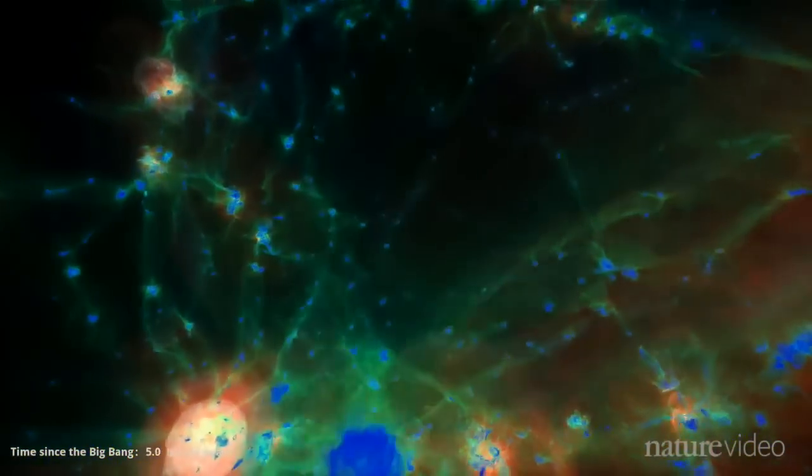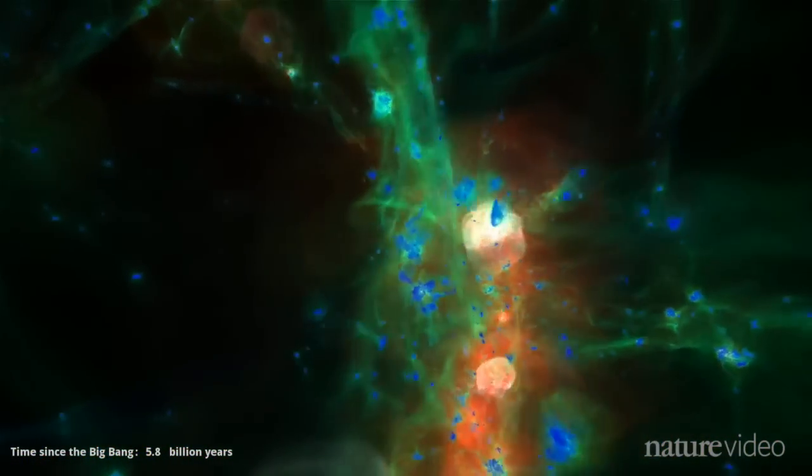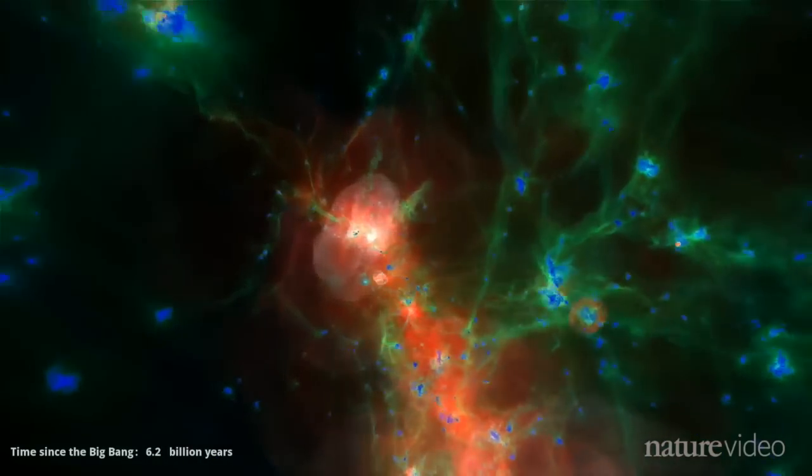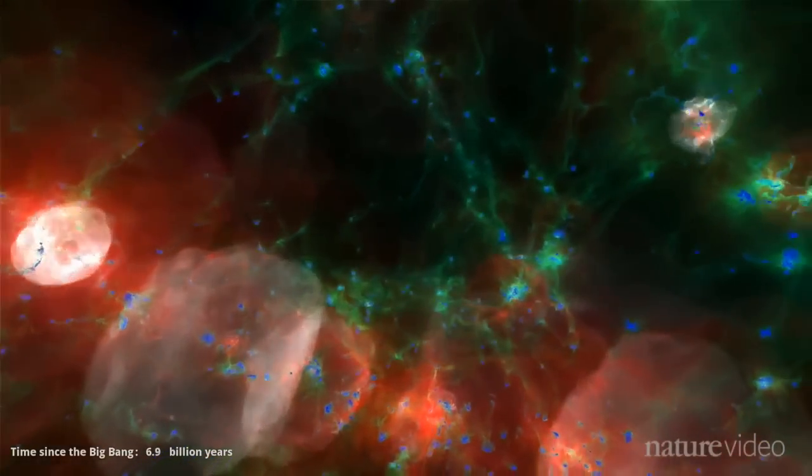Supermassive black holes grow at the center of these. As they gobble up matter, they superheat the material around it, blowing out gas in these violent white bursts. Over time, this enriches the space between galaxies with warm but sparse gas.